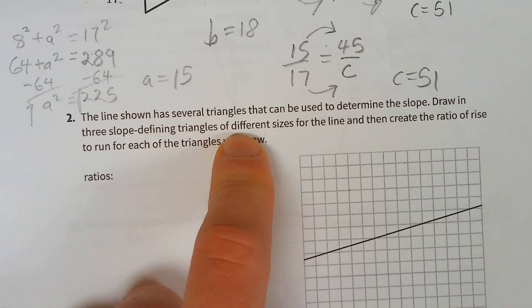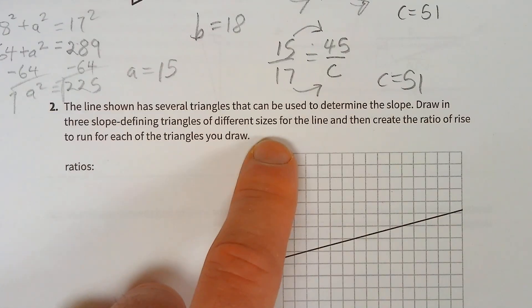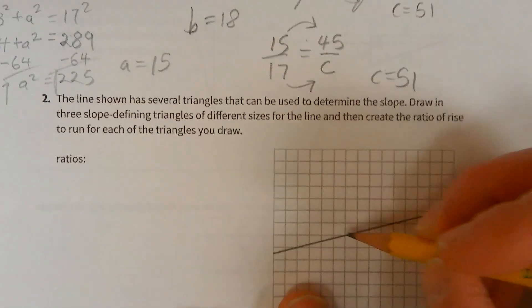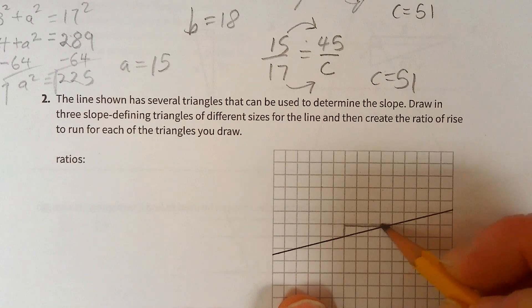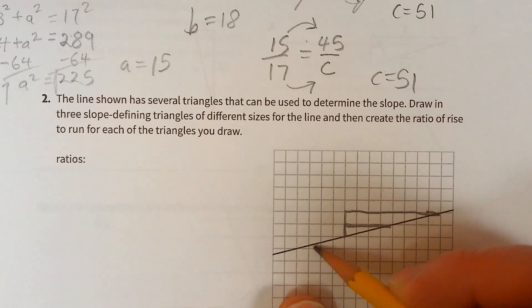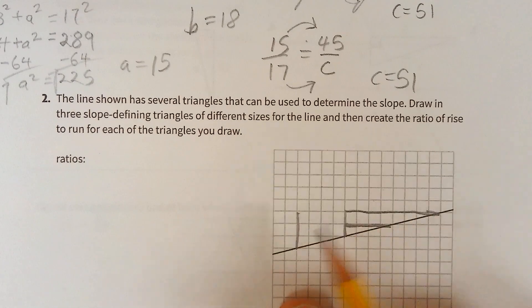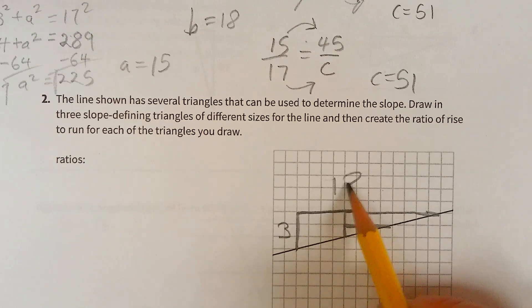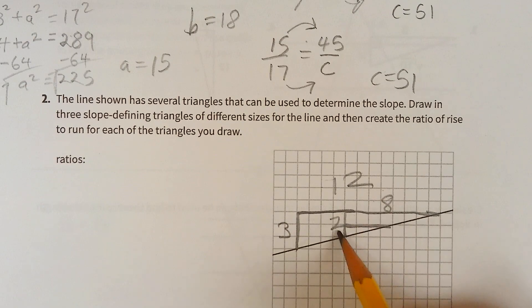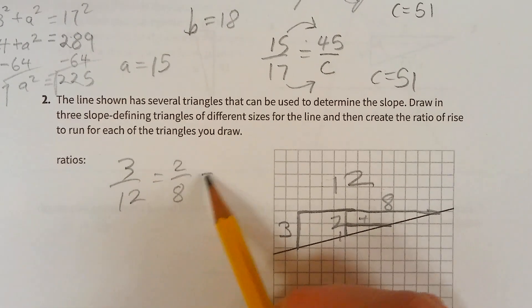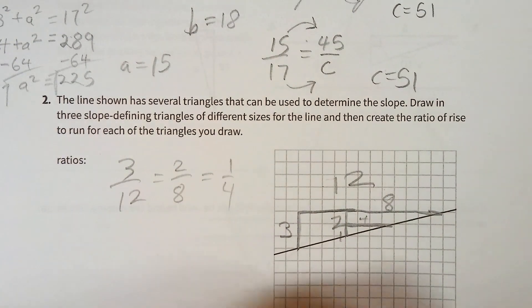The line shown has several triangles that can be used to determine the slope. Draw in the three slope-defining triangles of different sizes for the line, and then create the ratio of rise and run for each of the triangles you draw. Up 3 over 12, up 2 over 8, up 1 over 4. I think that's what they want.